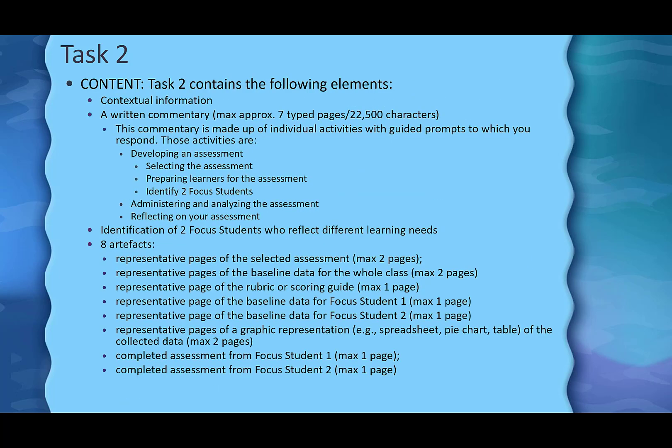While the content of Task 2 is laid out very similarly to Task 1, I've added some additional information that I don't believe is presented up front to you, and you're going to need that for later parts of this assessment. First, you'll provide contextual information, then a written commentary — a little longer than Task 1, but still about 7 typed pages. The total is 22,500 characters — that's every letter, punctuation, and space.